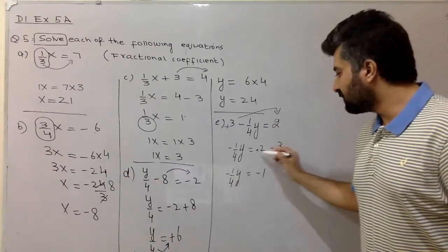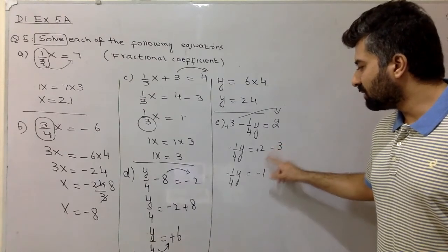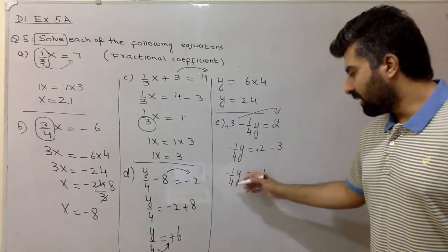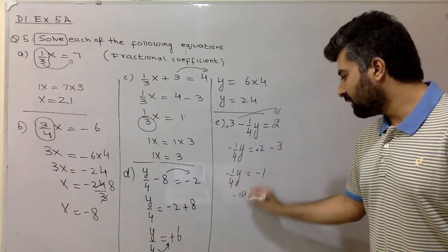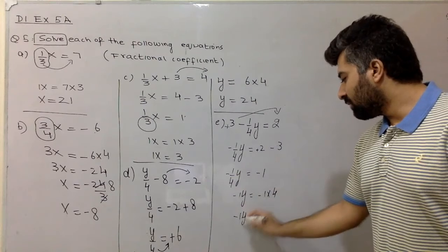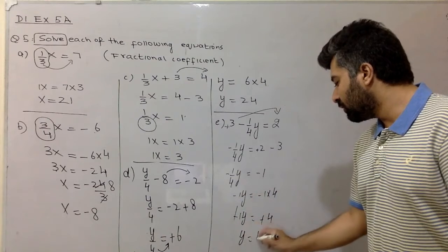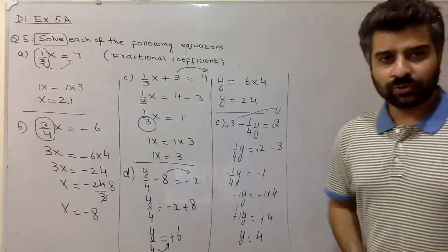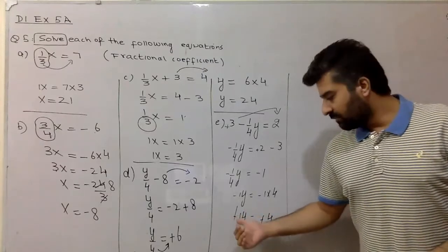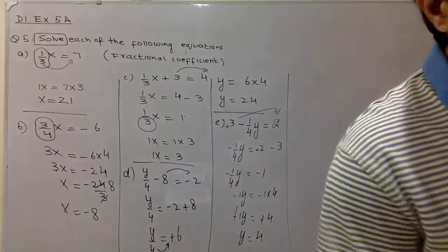The 2 was positive and the 3 was negative — signs are opposite, so the result is reduction, and the sign of the larger number is retained: minus 1. Now move this 4, which is dividing y, to the right side. Minus 1y will equal minus 1 times 4, which gives minus 4. Since both sides are negative, you can cancel the negative signs on both sides, giving y equal to 4. This is the solution.